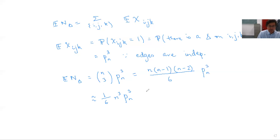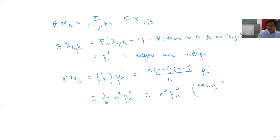For much of this section of the course, we won't even care about constants — so we'll say this is roughly n³p³, ignoring the 1/6 because it's a constant that doesn't go to zero or infinity as n tends to infinity. This quite sloppy calculation will be good enough for us, and you'll soon see why we can afford to be so sloppy.